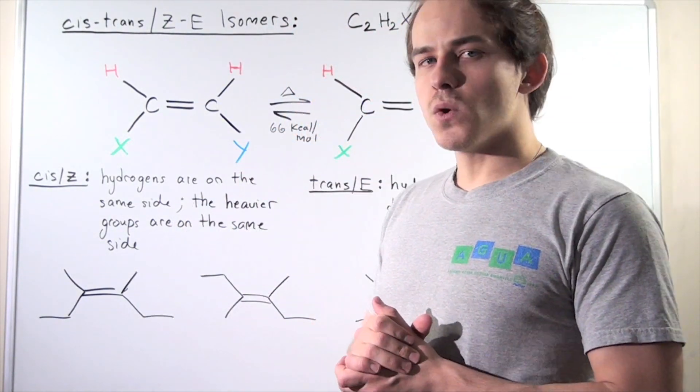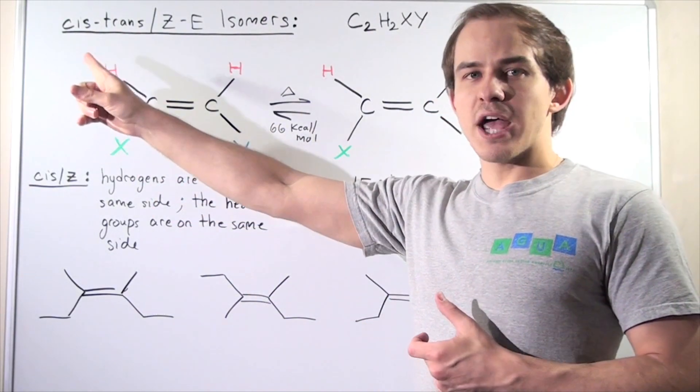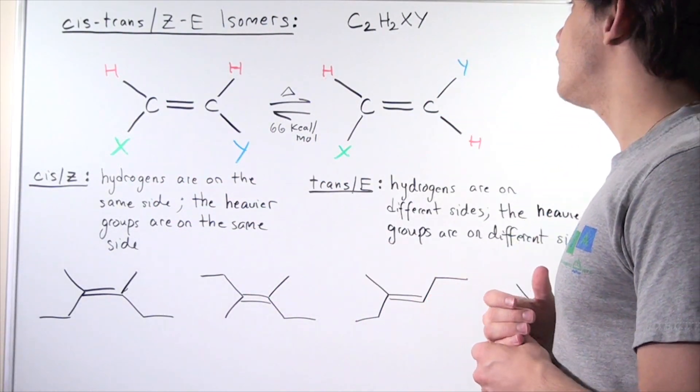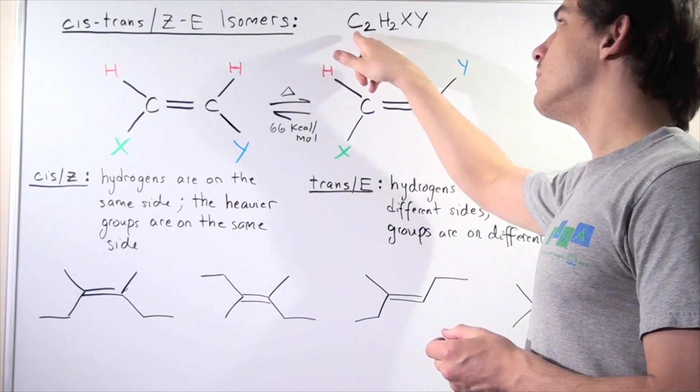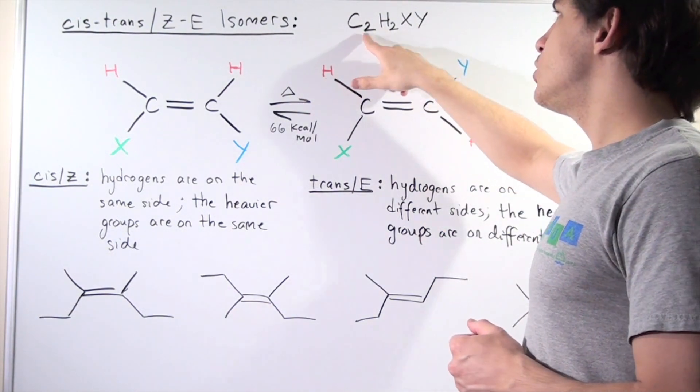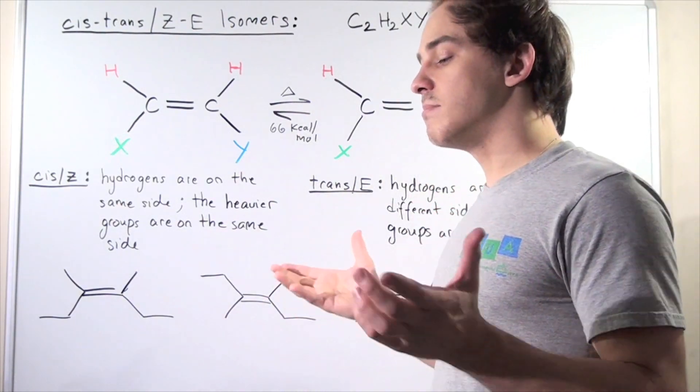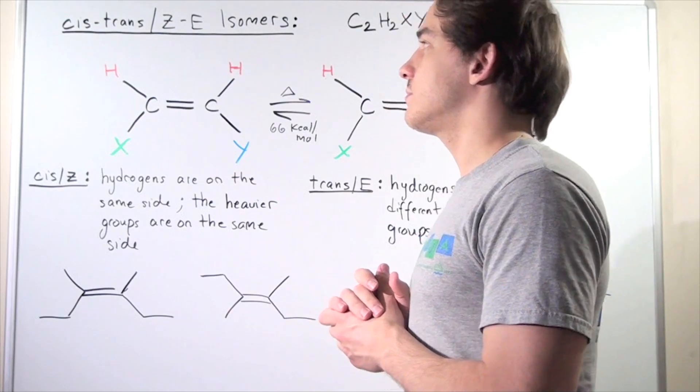In this lecture we're going to focus on cis-trans Z-E isomers. So let's begin by looking at the following alkene that has the following molecular formula, C2H2XY, where X and Y are simply two different compounds, molecules, or atoms that are not H atoms.